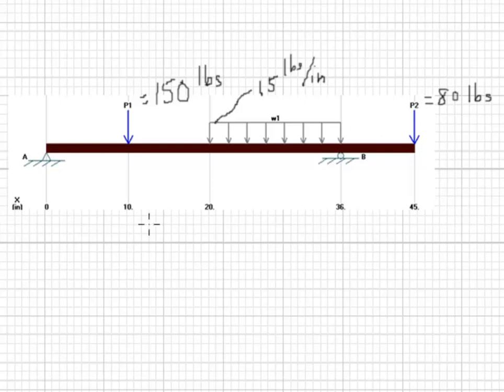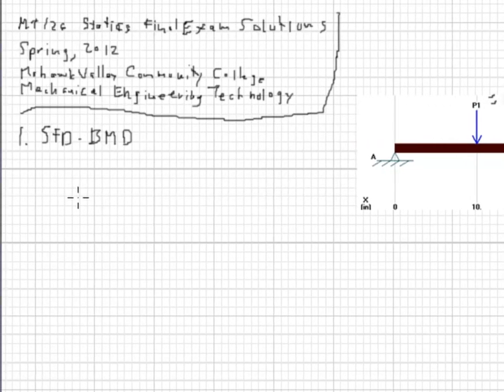And the first step for our shear force bending moment diagram after identifying the loads and sketching the beam is to find the reactions at A and B in this case. So, we have our moments about point A. They equal zero.